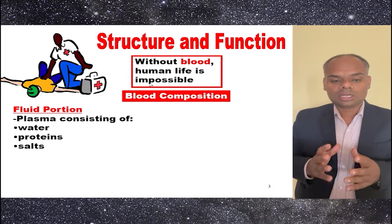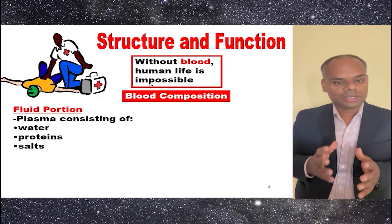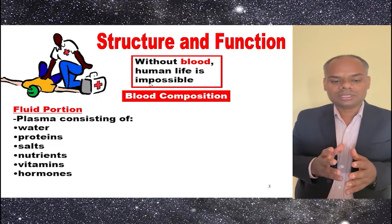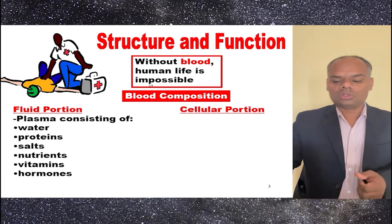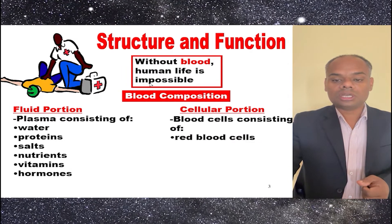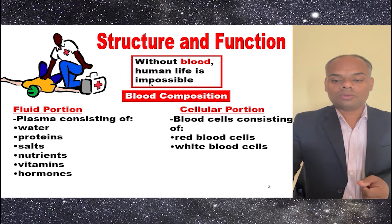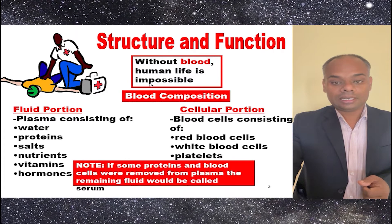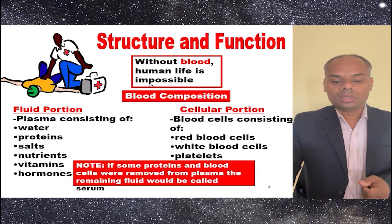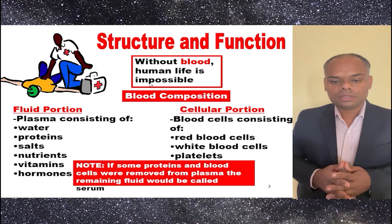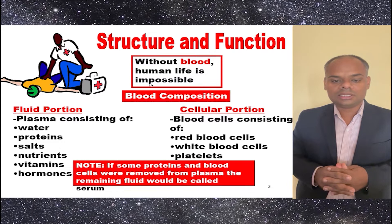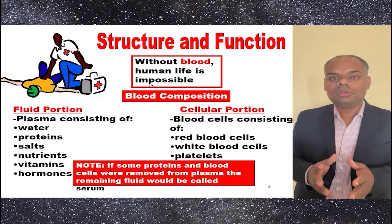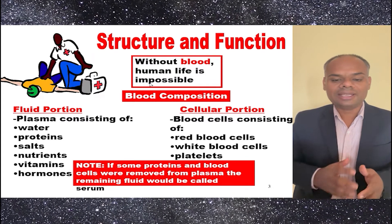The fluid portion consists of water, protein, salt, nutrients, vitamins, and hormones. Whereas the cellular portion consists of RBCs, WBCs, and platelets. And if some protein is removed from the plasma, the remaining fluid is known as serum.